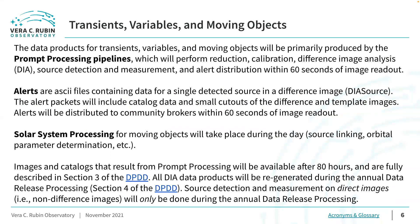The data products for transient variables and moving objects will be primarily produced by the prompt processing pipelines, which will perform reduction, calibration, difference image analysis, source detection and measurement, and alert distribution within 60 seconds of image readout. Alert packets are FITS files containing data for a single detected source and a difference image, and will include catalog data and small cutouts of the difference and template images. Solar system processing for moving objects will take place during the day. Images and catalogs from prompt processing will be available after 80 hours for images and after 24 hours for catalogs, and are fully described in Section 3 of the DPDD.